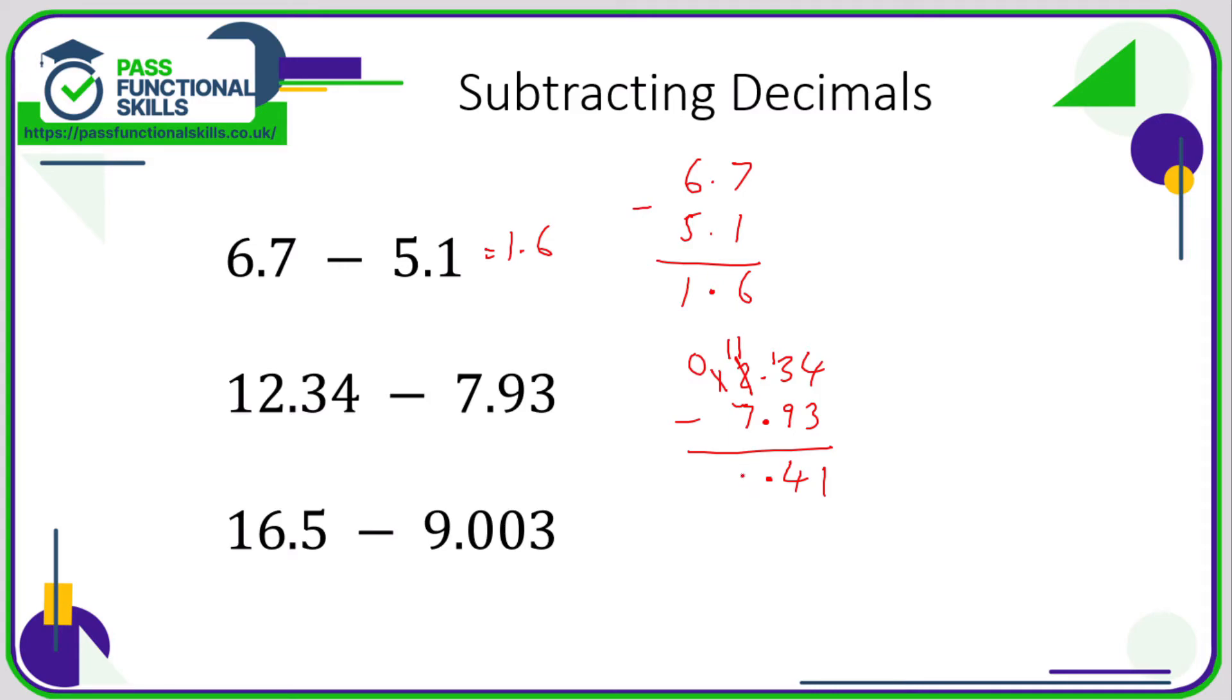And the final example: 16.5 take away 9.003. Again, the decimal points are in line, which means the 9 automatically fits under the 6. Probably it's a good idea to fill these with 0s. 0 minus 3 can't be done, so you need to borrow from the next column, which is empty, so you need to borrow from the 5.